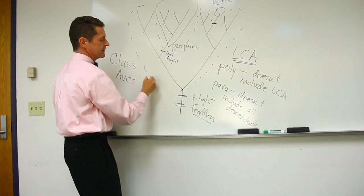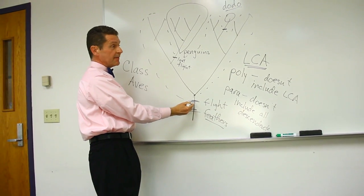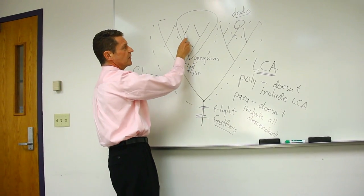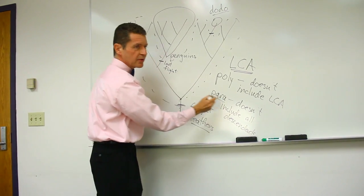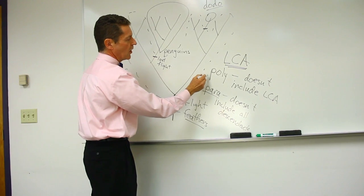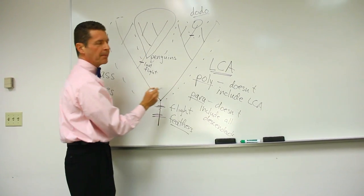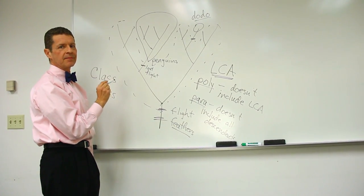All that. So the last common ancestor is in, so it's not polyphyletic. But you lose some of the descendants. So all flying birds are paraphyletic. All flightless birds are polyphyletic. Bottom line,